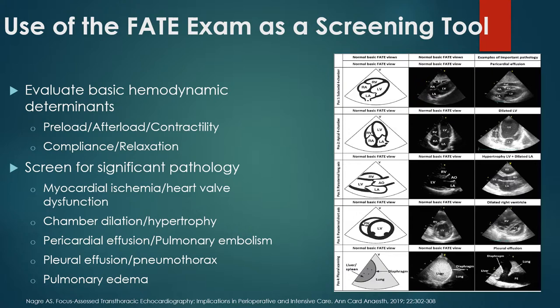It's sort of like instead of trying to calculate what your tidal volume is based on peak inspiratory pressure on your ventilator, you're actually measuring the spirometer. Other things you can tell from the FADE exam include compliance and relaxation status of the heart, as well as different chamber dimensions, dilation, and hypertrophy. You can detect myocardial ischemia and heart valve dysfunction, assess for effusion and pulmonary embolus, pleural effusion, pneumothorax using different probe positions, and pulmonary edema by looking for B-lines.